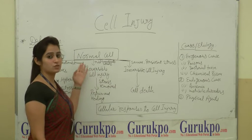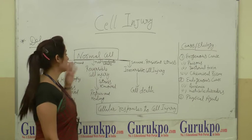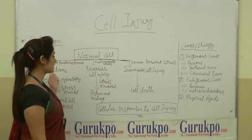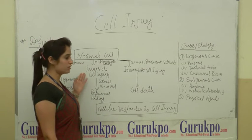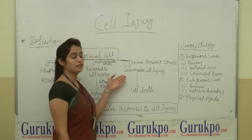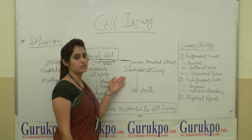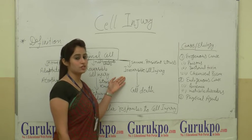There are three types of cell injury: Adaptation Cellular Injury, Reversible Cellular Injury, and Irreversible Cellular Injury.